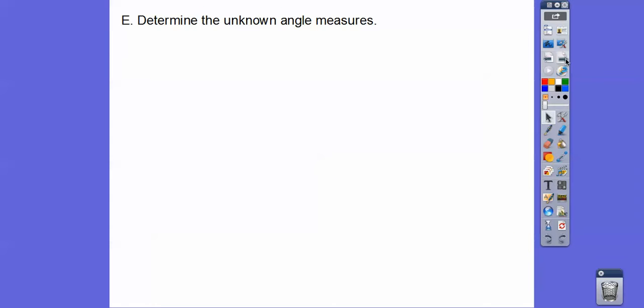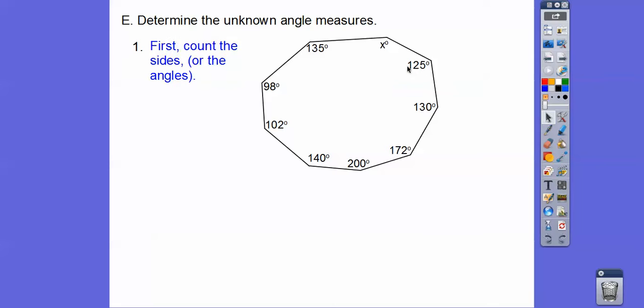So determine the unknown angle measure. So here we have, let's see, one, I'm counting up the angles. So we've got to do the n minus 2 times 180, but we need to figure out what's n. How many sides does it have? Well, how many sides it has is the same as how many angles it has. So let's count the angles. One, two, three, four, five, six, seven, eight, nine. There's nine sides. N is nine.